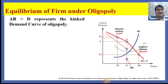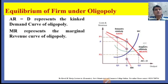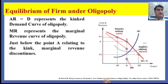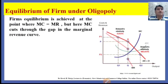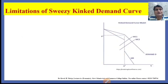Average revenue (AR) represents the kinked demand curve of oligopoly. Marginal revenue (MR) represents the marginal revenue curve of oligopoly. Just below point A, relating to the kink, marginal revenue discontinues. Marginal cost (MC) represents the marginal cost curve. Firm equilibrium is achieved at the point where marginal cost equals marginal revenue, but in this case that condition is not fully satisfied — instead, the marginal cost cuts through the gap in the marginal revenue curve. This is also a limitation of the kinked demand curve model.